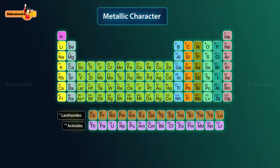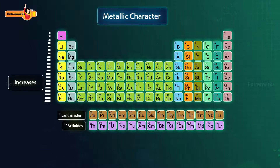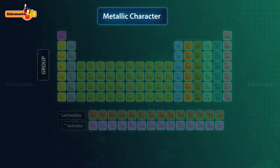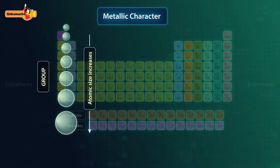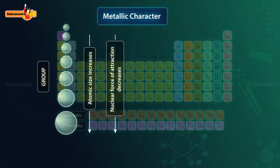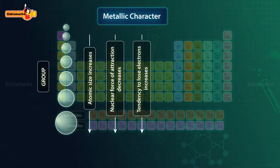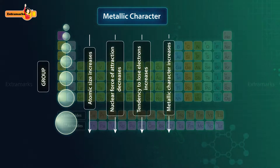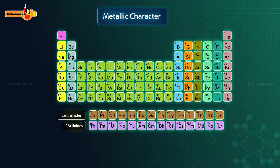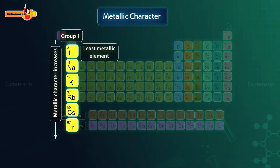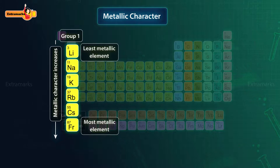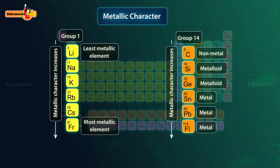On moving down the group, the metallic character or electropositive character increases. This is due to the increase in atomic size down the group. The distance between the nucleus and the outermost shell increases, the force of attraction between the nucleus and electrons decreases, and less energy is required to lose the electrons. Thus, metallic character increases. In group 1, lithium is the least metallic element while francium is the most metallic. A similar order of increasing metallic character can be seen for the elements of group 14.